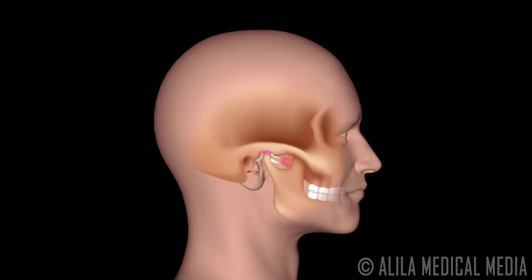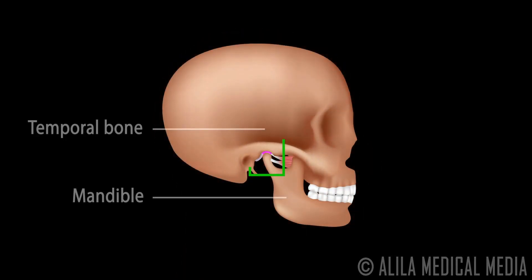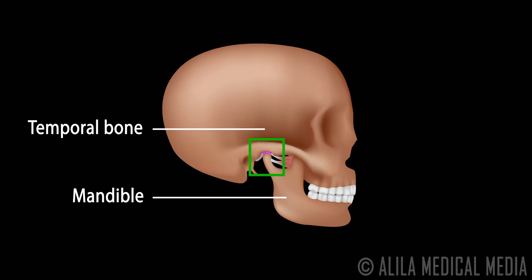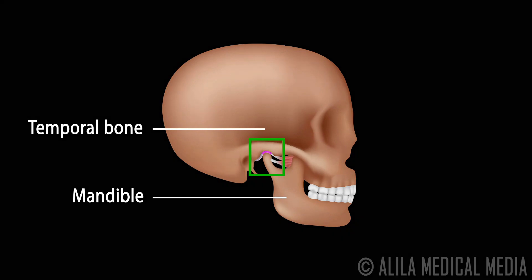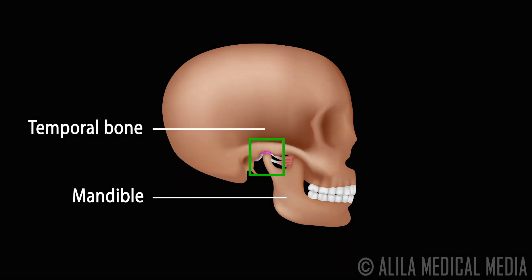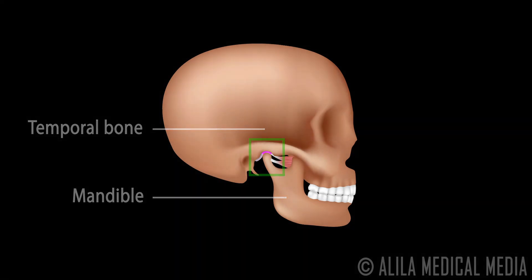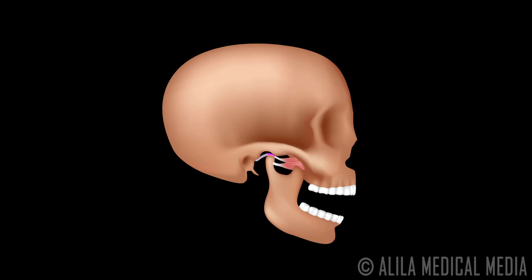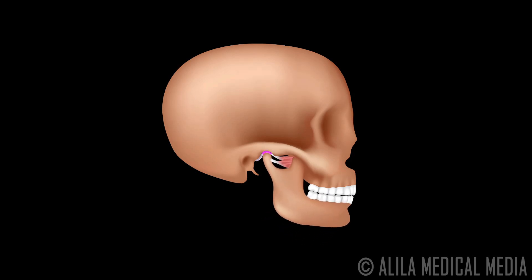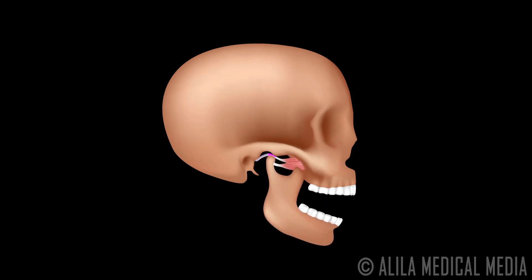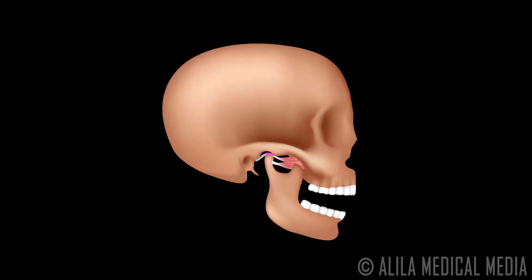The temporomandibular joint, the TMJ, is the joint between the lower jawbone, the mandible, and the temporal bone of the skull. The TMJ is responsible for jaw movement and enables chewing, talking, and yawning.